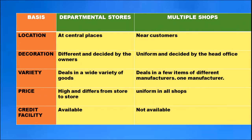Comparing departmental stores and multiple shops: departmental stores are usually located at central places while multiple shops are located near customers. Decoration of departmental stores differs and is decided by the owners, while decoration of multiple shops is uniform and decided by the head office. Departmental stores deal in a variety of goods while multiple shops deal in a few items of one or different manufacturers. Price is uniform across multiple shops but can differ between departmental stores. Credit facility is not available in multiple shops, which sell only on cash basis, whereas departmental stores provide credit facility to customers.